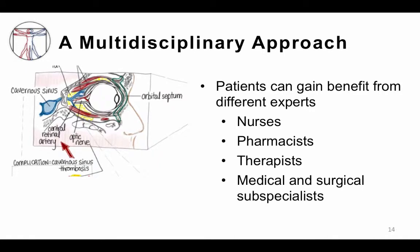When treating a complicated infectious disease, a multidisciplinary approach is going to be critical. The team approach allows you to collect information and make decisions in the best interest of the patient. Nurses at the bedside are the eyes and ears to determine how the patient is responding to treatment. Pharmacists help determine the best drugs to reach the site and treat the infection. In the case of orbital cellulitis, ophthalmic surgeons, otolaryngologists, pediatricians, and infectious disease doctors may all need to work together.